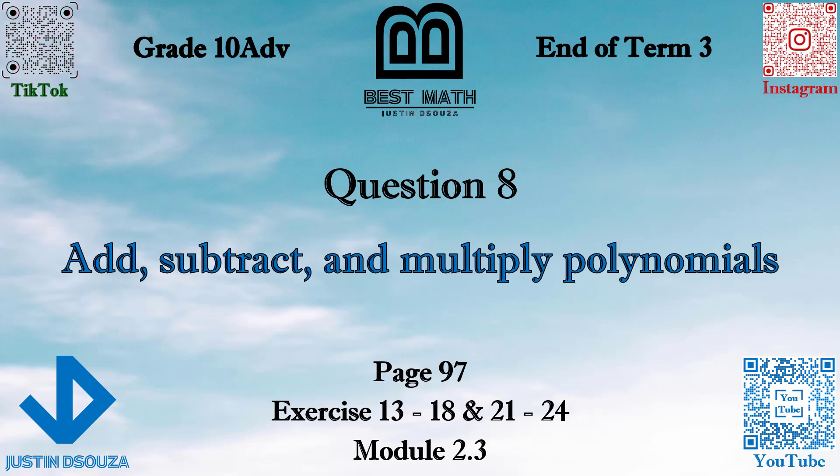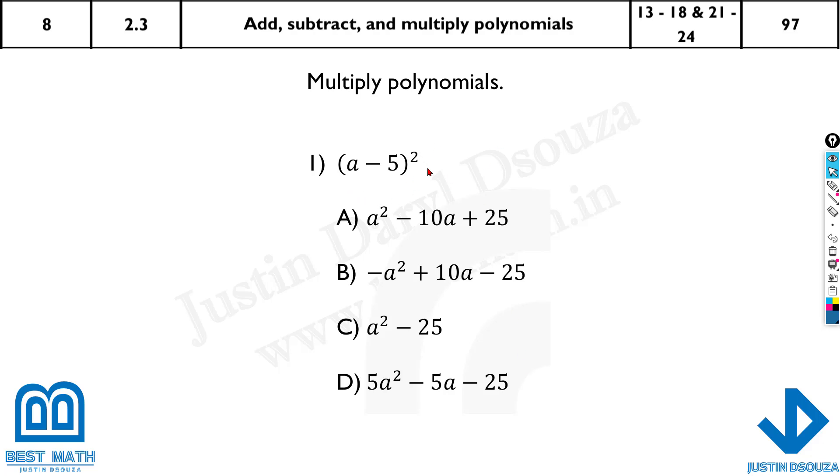In this question we will do arithmetic operations on polynomials. They have asked us to multiply this polynomial. Looking at this a minus 5 the whole square, it's a minus b the whole square identity.